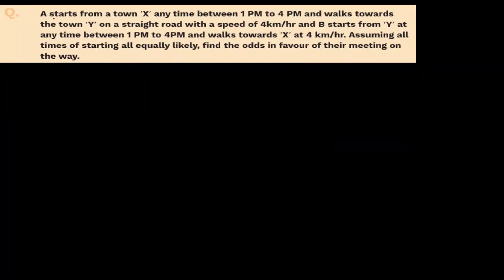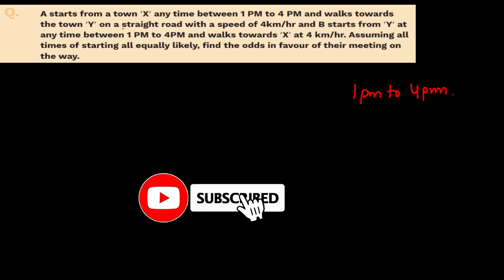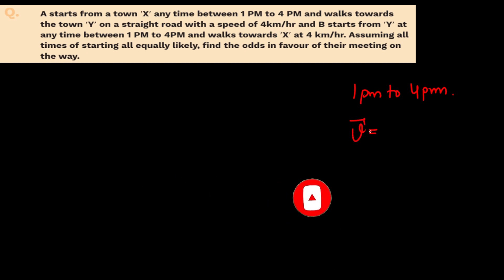Today's question: person A starts from town X at any time between 1pm to 4pm and walks towards town Y on a straight road with a constant speed of 4km per hour. Person B starts from town Y at any time between 1pm to 4pm and walks towards town X with the same speed of 4km per hour. Assuming all starting times are equally likely.